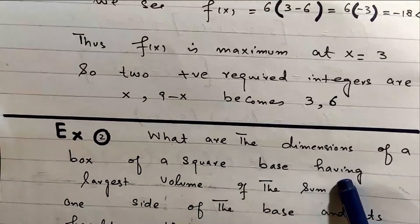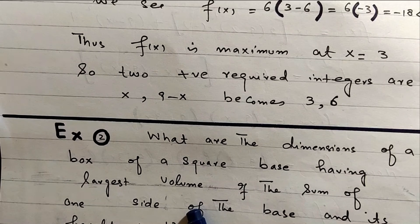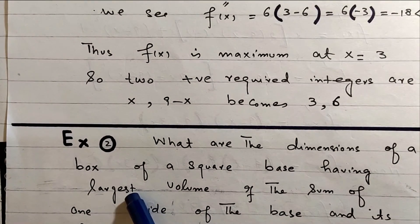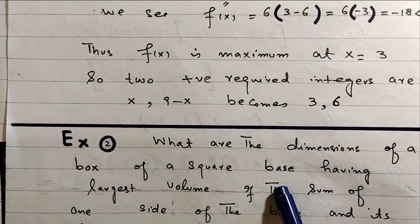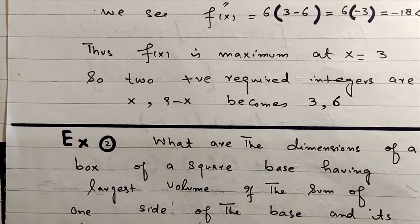Example 2: What are the dimensions of a box with a square base having the largest volume, if the sum of one side of the base and its height is 12 cm?